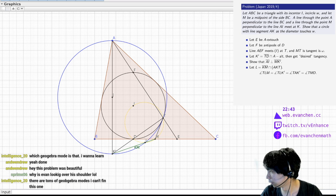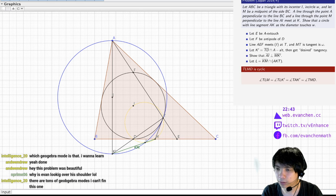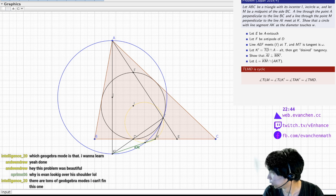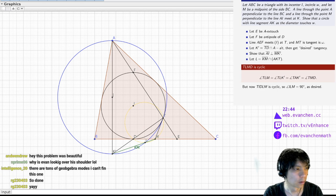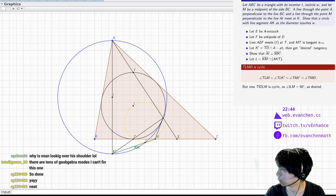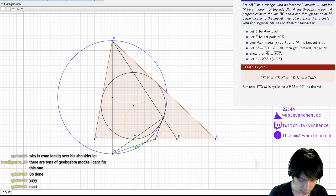So TLMD is cyclic. But now TIDLM is cyclic, so IML is 90 degrees as desired. That was very cute. I agree, this is a cute problem. And we did it!